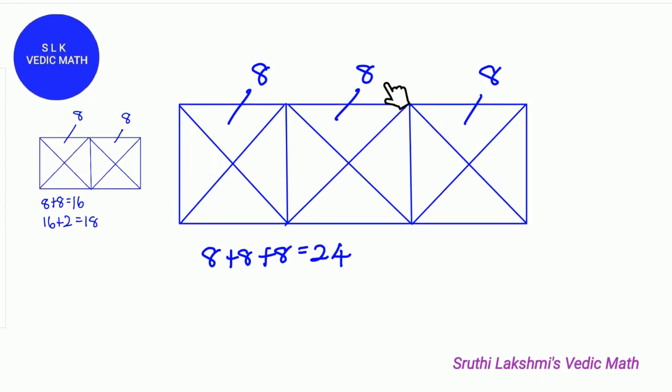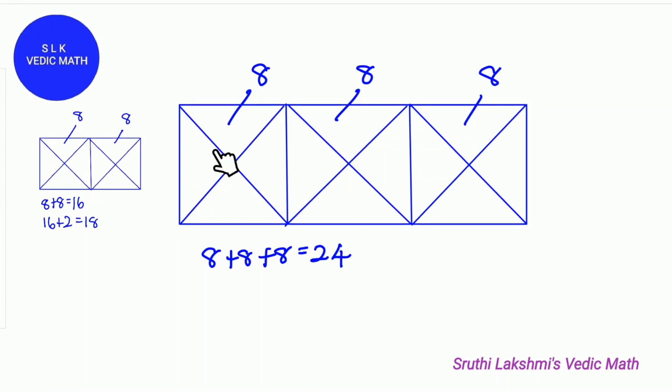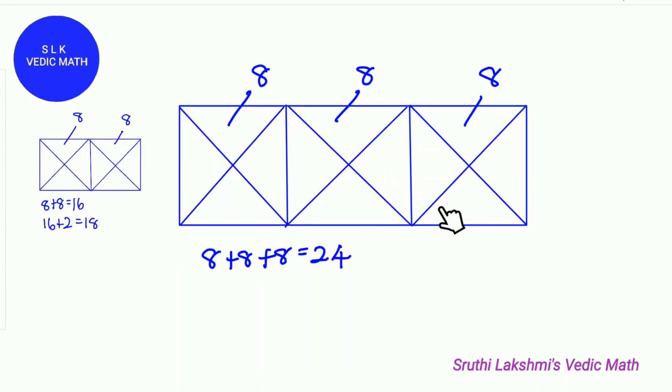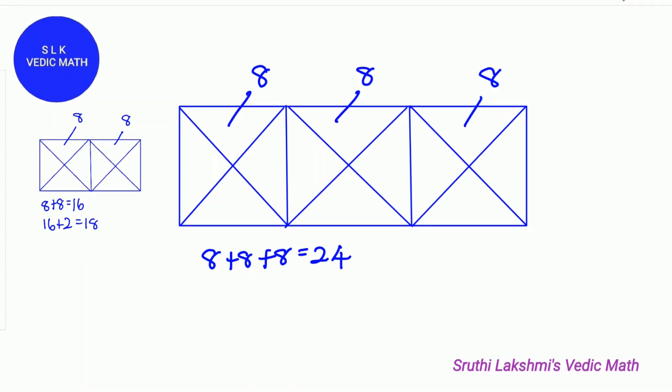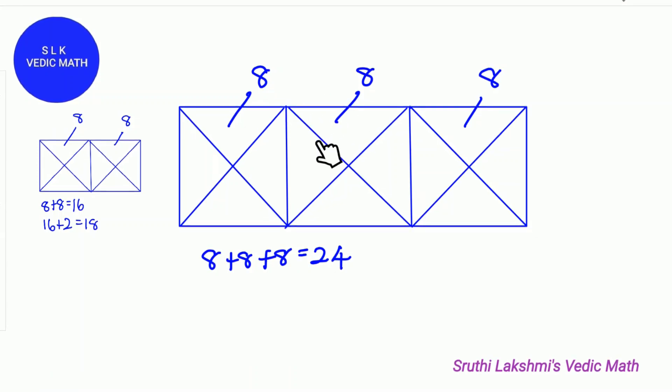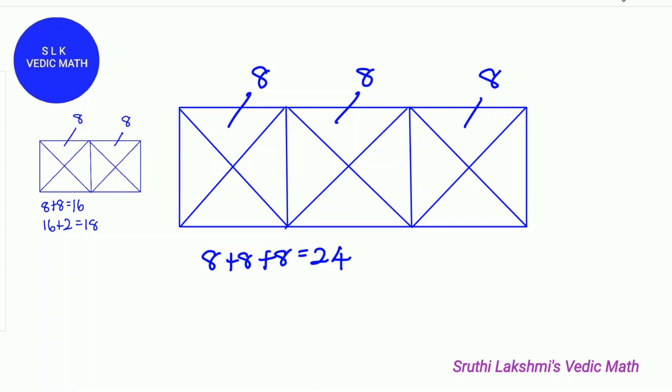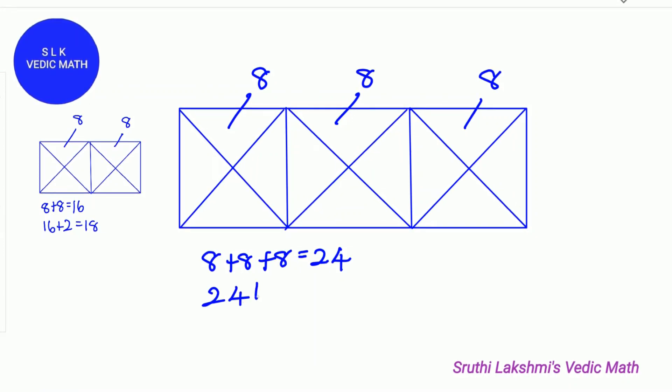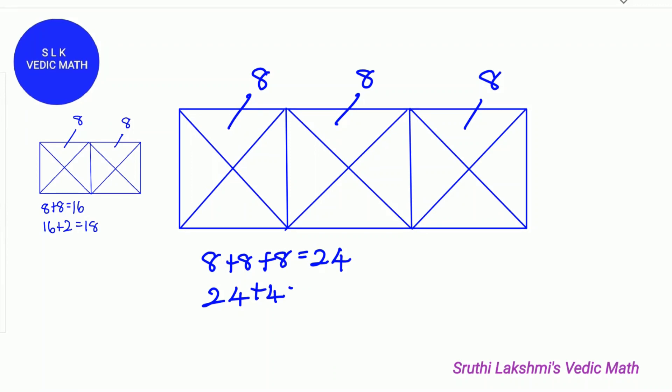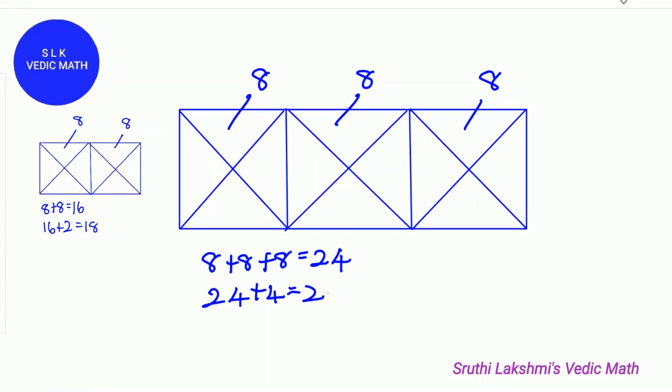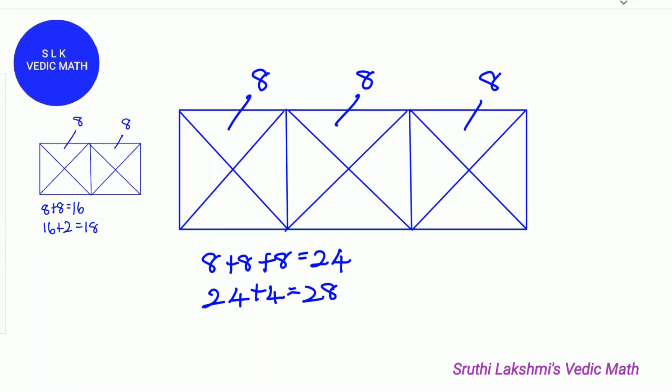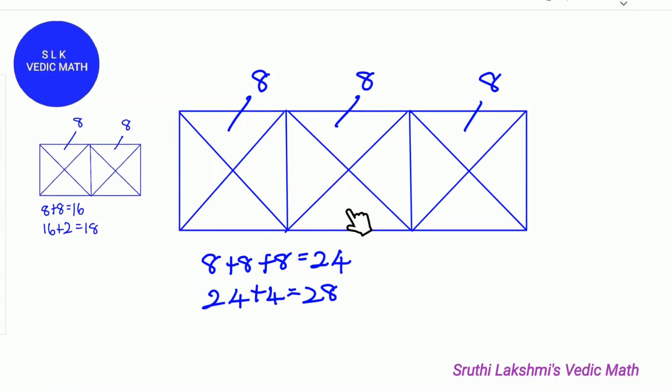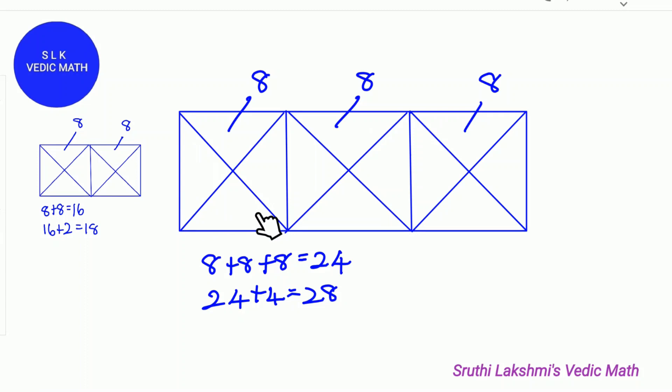Let's just look at these 2 squares. 1 triangle, 2 triangle. Next let's just look at these 2 squares. We already have 2 triangles, 3 triangle and 4 triangle. So we add 24 plus 4. 24 plus 4 is 28. So there are 28 triangles in this big rectangle.